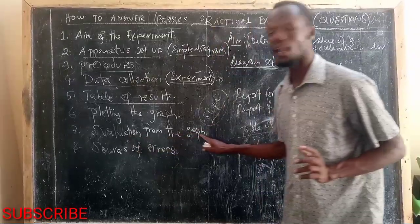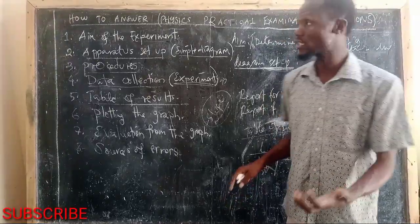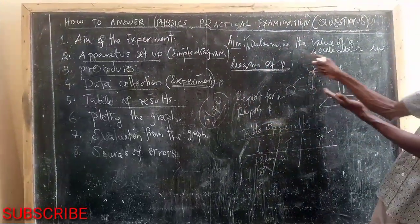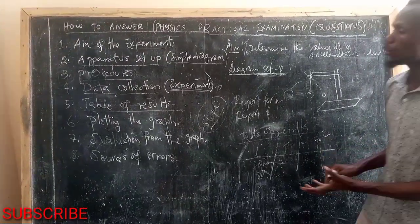That is evaluation from the graph. But also, you can determine what you are required to determine. Example, for the simple pendulum, we've been told that we have to determine the value of acceleration due to gravitational force. Means that you have to use